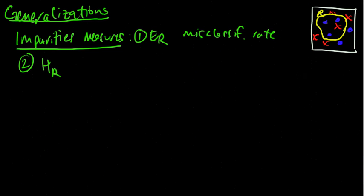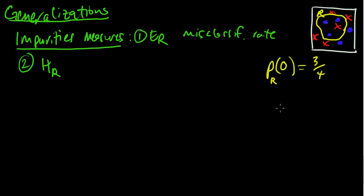So in this case, let's call the blues zeros and the reds ones. The probability of zero in R — denoted with subscript R — is three out of four, since we said blue zeros. And the probability of ones is one fourth. And if we had other classes, we could have probability of two, and so on.